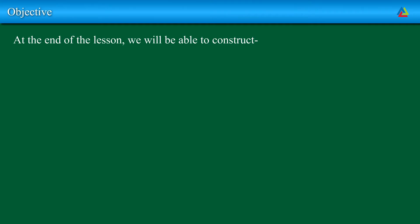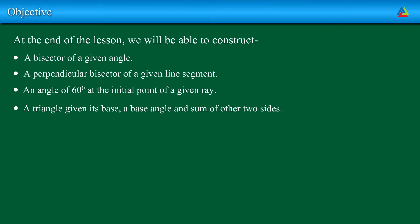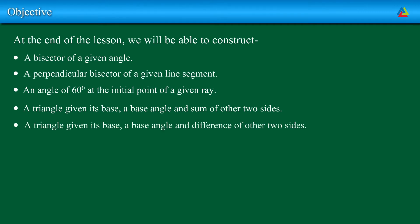In this lesson, we will be able to construct a bisector of a given angle, a perpendicular bisector of a given line segment, an angle of 60 degrees at the initial point of a given ray, a triangle given its base, a base angle and sum of the other two sides, a triangle given its base, a base angle and difference of the other two sides, and a triangle given its perimeter and its two base angles.